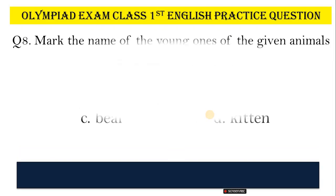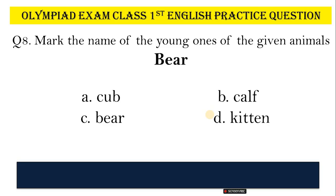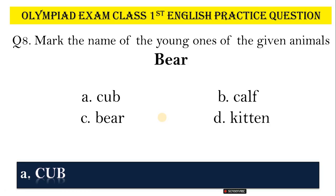Question No. 8. Mark the name of the young ones of the given animals. Animal: Bear. Options: A, Cub; B, Calf; C, Bear; D, Kitten. Correct answer is Option A, Cub.